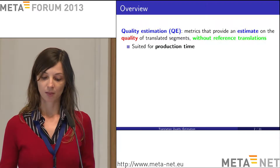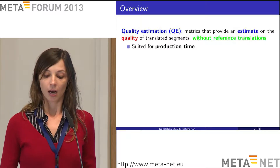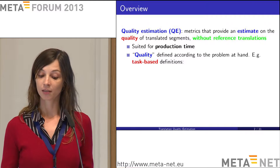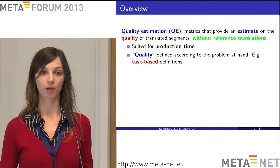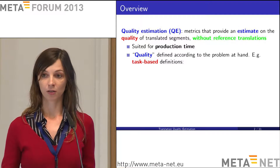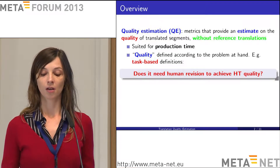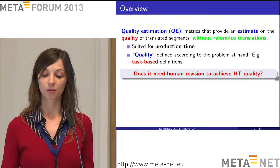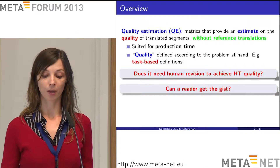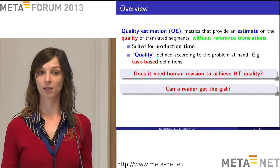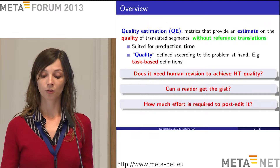These metrics are suited for production time, when you basically don't have access to previously created translations. Quality is defined based on the problem at hand — task-based definitions. One example is a binary decision of whether a translation needs revision or already has human translation quality. Another is whether a reader who can't read the source text can get the gist, or how much effort would be required to fix a translation.